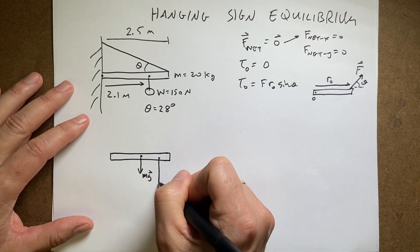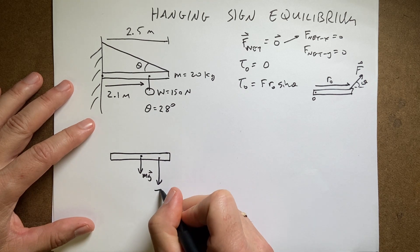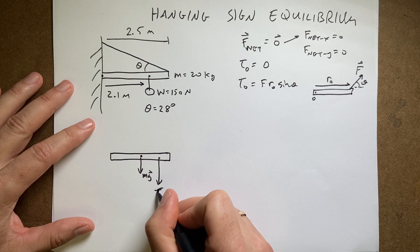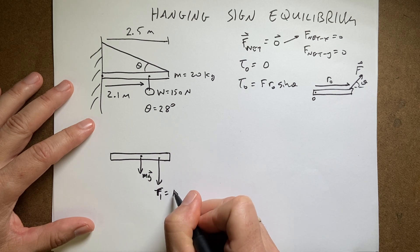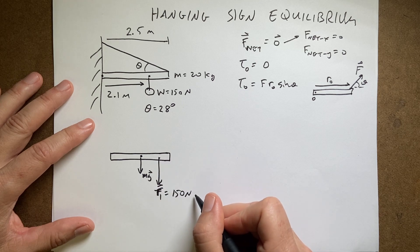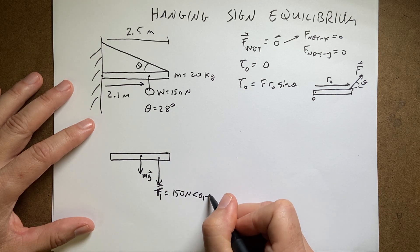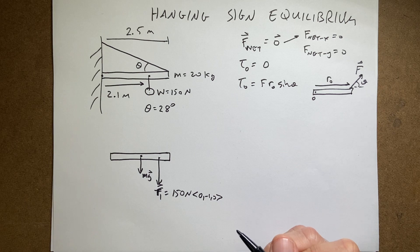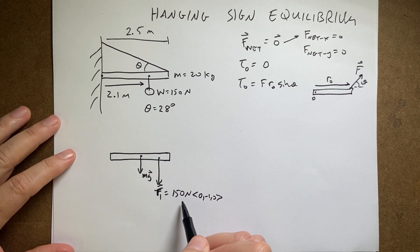I just don't want that. I'm going to put it right here. So let's call this F1 equals 150 newtons in the negative direction. So that'd be zero, negative one, zero, if you want it as a vector. I shouldn't have put the number there.